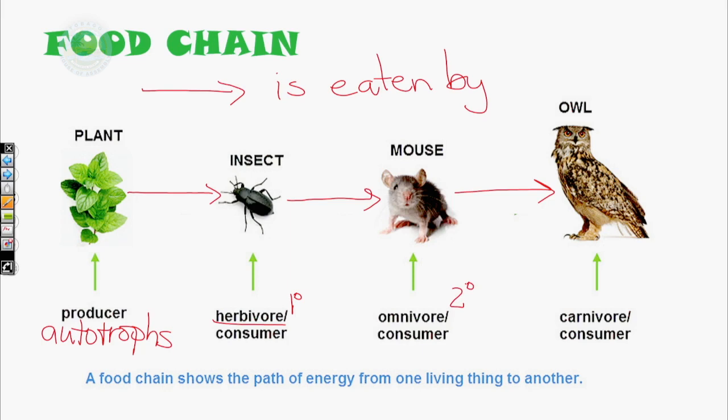The secondary level, or secondary consumers, can either be a carnivore or an omnivore. An omnivore eats both plants and animals — pigs, mice, and humans are omnivores. Then your tertiary consumers, and depending on the size of your food chain you can have quaternary, tend to be only carnivores. Carnivores eat only meat. Here you have a simple food chain showing four levels from your producer to your top predator, which would be the owl.